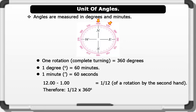Therefore, the second hand moves 1 divided by 12 times 360 degrees. This gives us 30 degrees.